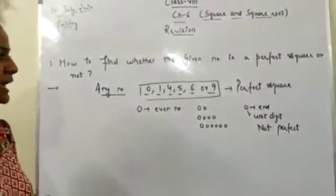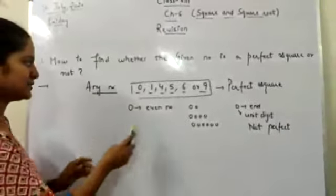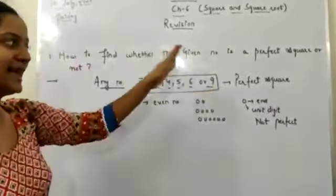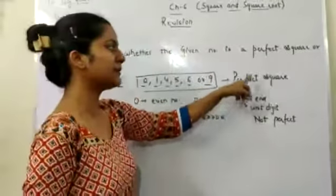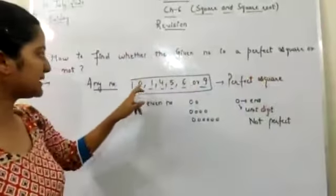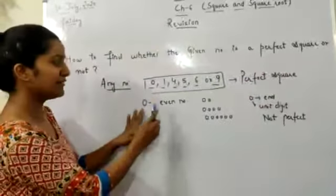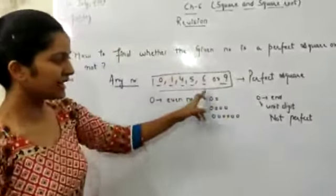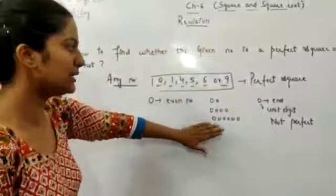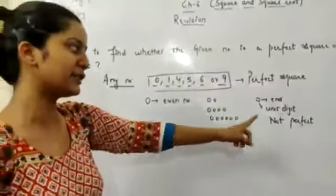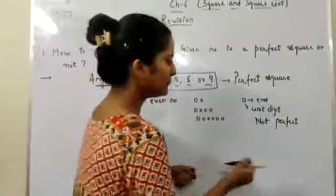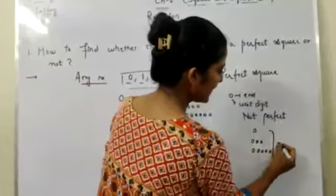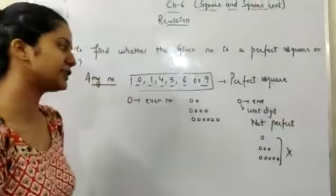Again repeating: if a number ends with the digit 0, 1, 4, 5, 6, or 9, only then the given number will be a perfect square. The exception with 0 is that we must have an even number of zeros — like 2, 4, or 6 zeros. If we have 1 zero, 3 zeros, or 5 zeros at the end, then that number will not be a perfect square.